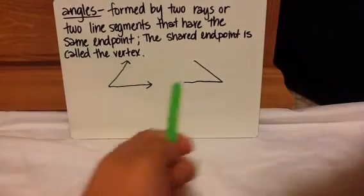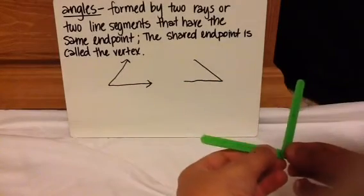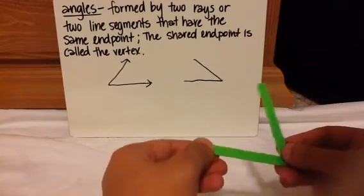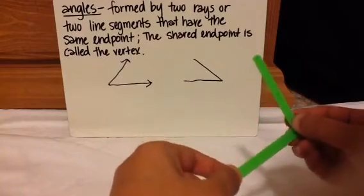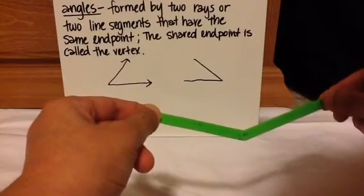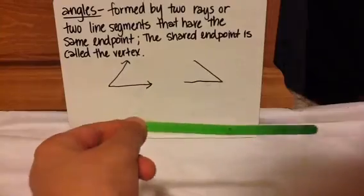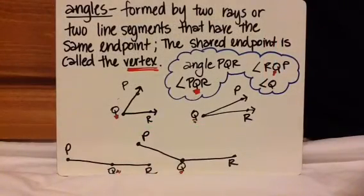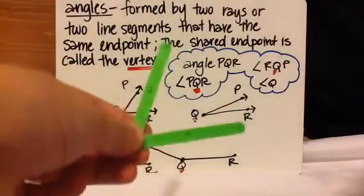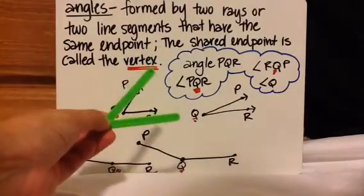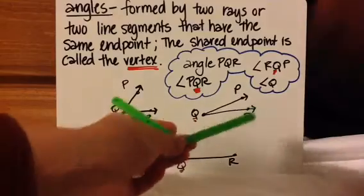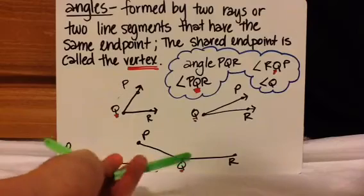Let's look at an angle. If you have two line segments or two rays and you connect them, they share the same endpoint — that's the vertex. I can have a very tiny angle where the space inside is very small, or it can be wider, or it can be very, very huge. It can even be like this — still considered an angle. So angles come in all different sizes.